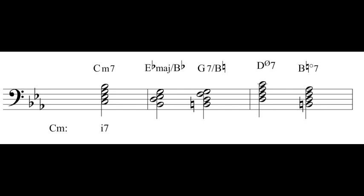The next chord is E-flat major seventh with B-flat in the bass. E-flat is scale degree 3 in C minor — C is 1, D is 2, E-flat is 3 — so we need some Roman numeral III. It's a major seventh chord, so capital III with M7. B-flat is in the bass, and B-flat is the fifth of the chord, so we need the bass position symbol for second inversion of a seventh chord, which is 4-3. The full label is capital III with M4-3.